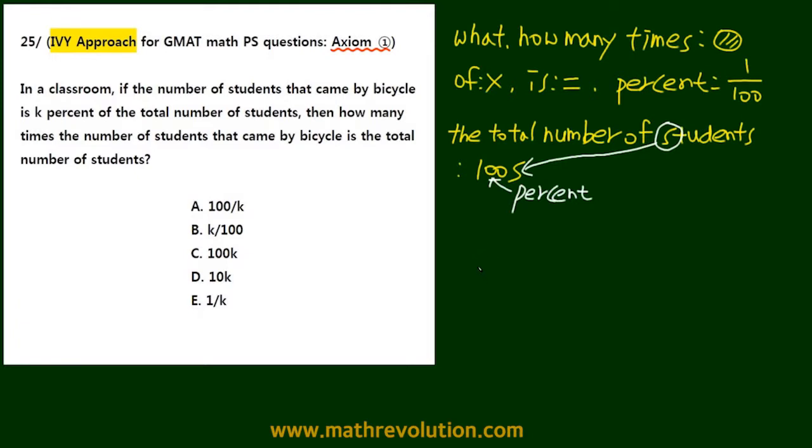Now the number of students that came by bicycle is k percent of the total number of students. So the students that came with bicycle was equal to, was is equal to, k percent, so k times 1 over 100 times the total number of students, which is 100s.